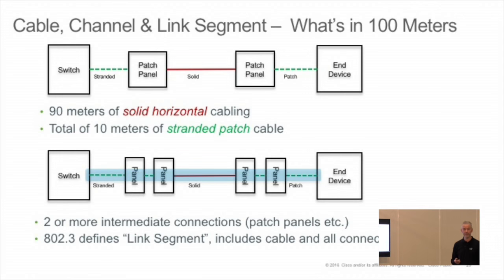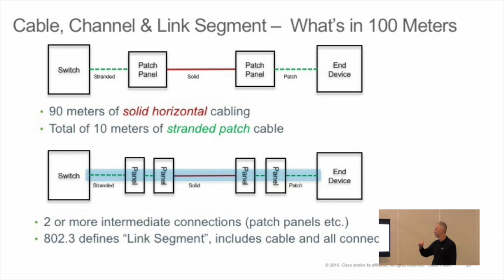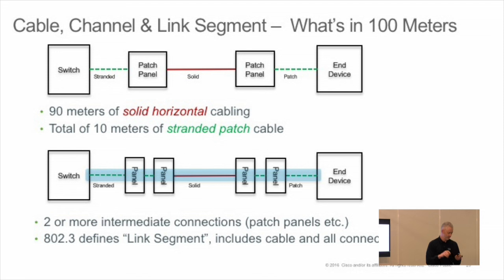Now for technology — going to skip through this fast. This is how cabling is built: switch, stranded, patch, solid. The stranded cable is the easiest to bend but not so good for long distance. Channel matters. In 802.3, there's a defined link segment — everything between your device and the port — including the cables, connectors in the box, and all the patch panels.